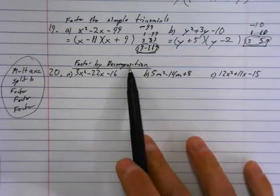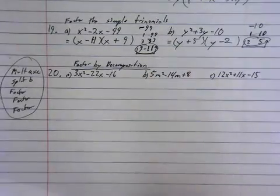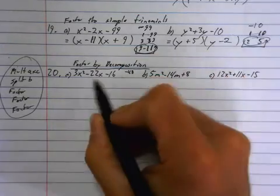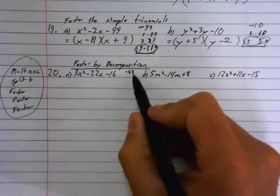So, look up your note for decomposition, but this is the short step. You're going to multiply a times c. So, 3 times 16 is going to negative 48. Then, I'm going to split b. I need a factor pair that adds to 22 and multiplies to 48.